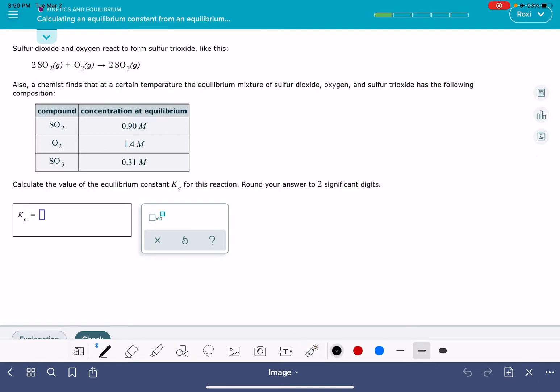The first thing you should do is write the equilibrium expression for the chemical reaction. Remember that this is a fraction. On the top of the fraction, we write our products, and each product is raised to its own stoichiometric coefficient. The product of this reaction is SO3.